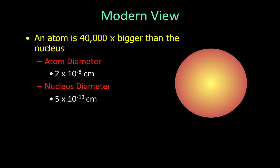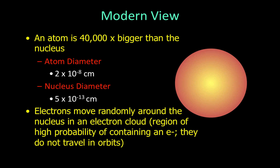Consider, for example, that an atom is about 40,000 times bigger than the nucleus. An atom's diameter can be 2 times 10 to the minus 8 centimeters, whereas its nucleus would have a diameter of 5 times 10 to the minus 13 centimeters. A nucleus is extremely small, yet it contains most of the mass. Electrons move randomly around the nucleus in an electron cloud — a region of high probability of containing an electron.